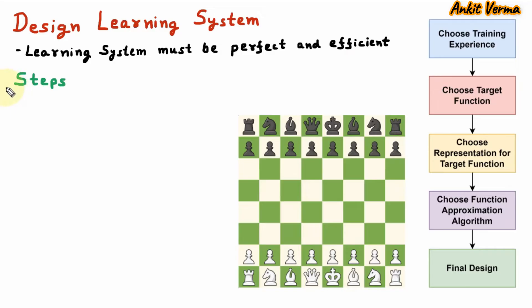Now we are learning the steps to design a learning system. Here the first step is choose training experience. Experience is also called data. So here we are choosing training data. Training data impacts the success or failure of model.